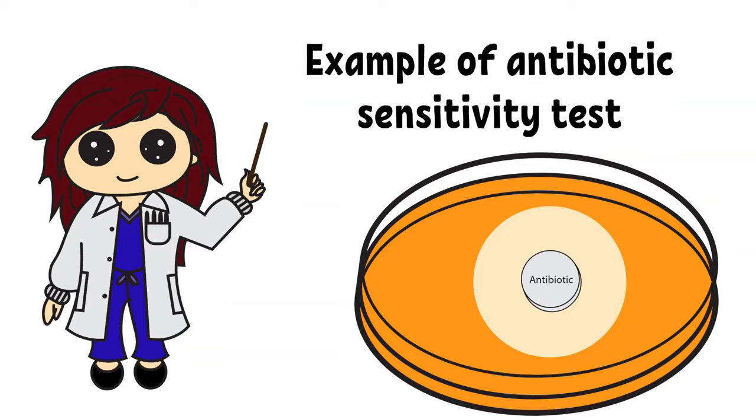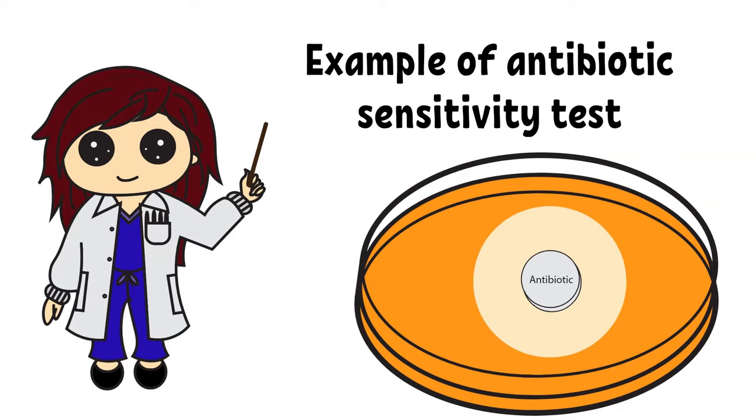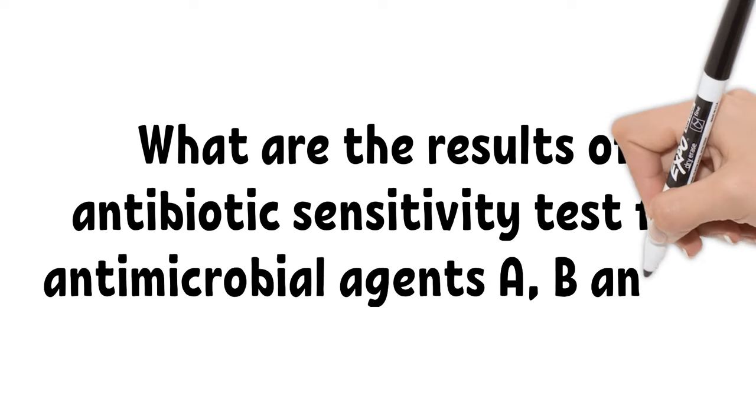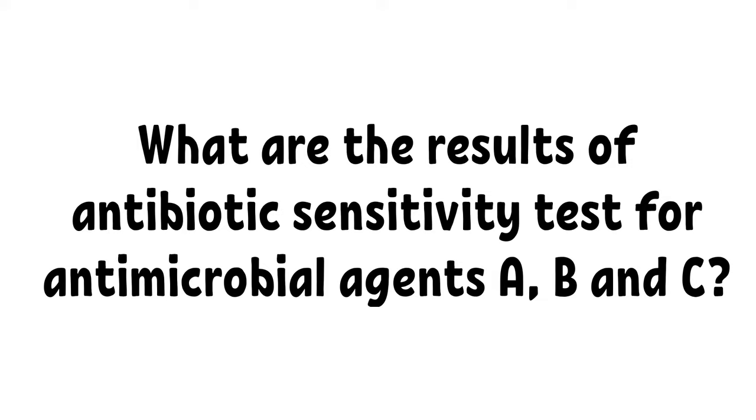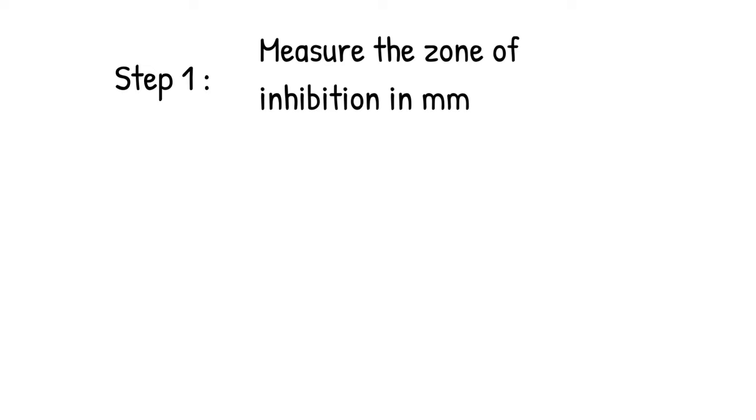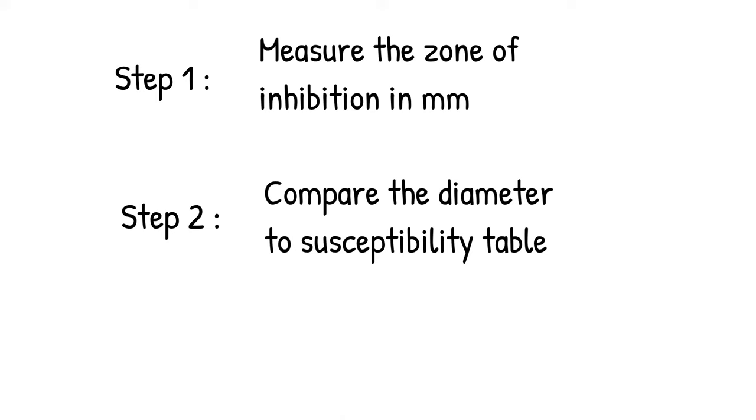Let's work on some examples of how to interpret antibiotic sensitivity tests. What are the results of antibiotic sensitivity tests for antimicrobial agents A, B, and C? First, we have to measure the zone of inhibitions in millimeters. Second, we compare the diameter in millimeters to the susceptibility tables.